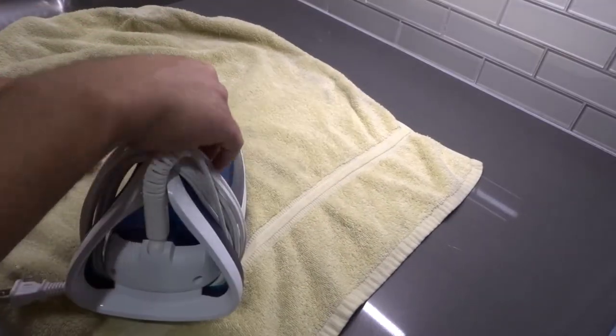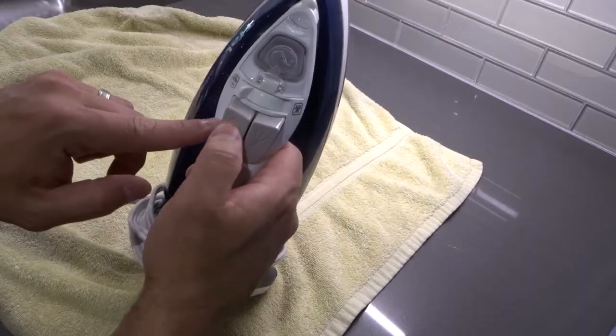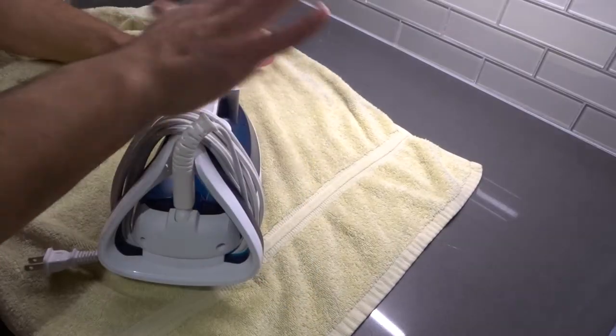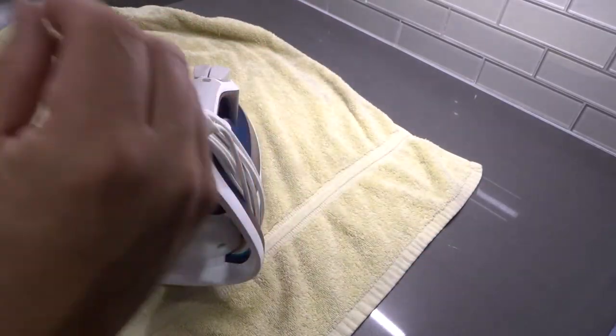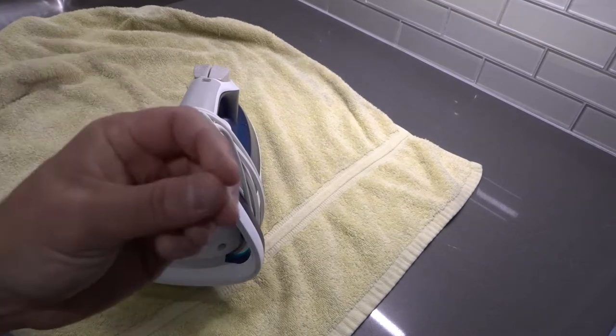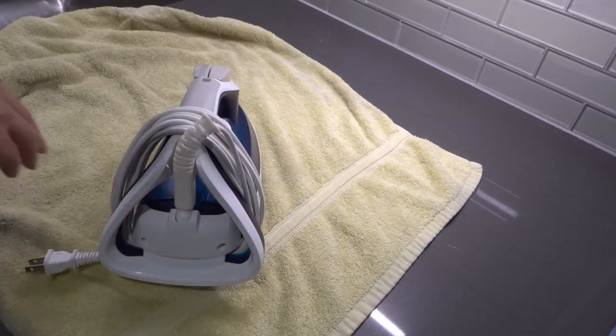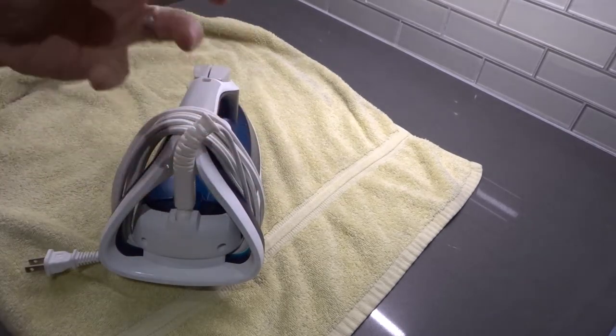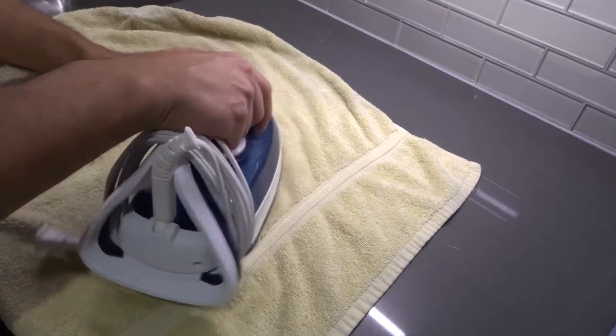Keep the iron moving at the lowest heat setting, and if it has a steam button, you want to push that steam button a couple times. What that will do is get a little bit of moisture, a little bit of steam into those fibers of the paper. It will loosen them up and make them more malleable.